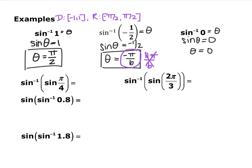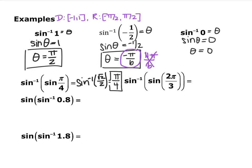Sometimes you'll see problems where you're taking the inverse of a regular function of an angle, or the regular function of an inverse of a ratio. Do it step by step, inside first. The sine of π/4 is √2/2. Then solve sine inverse of √2/2: sine of what angle equals √2/2? That's first quadrant, so π/4. You end up back with π/4.